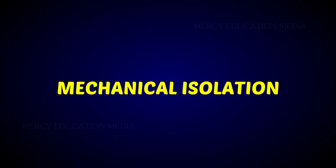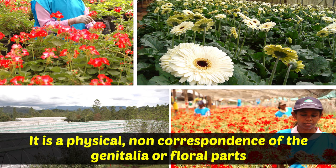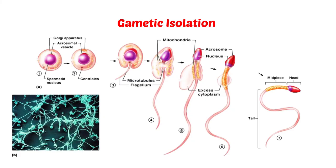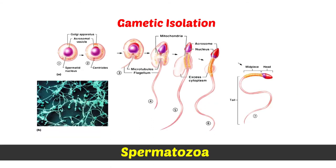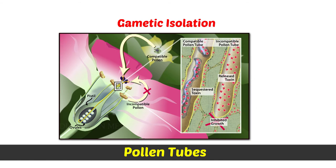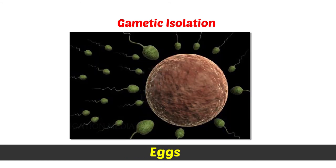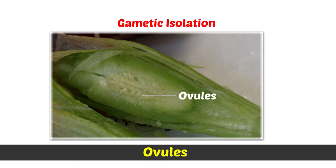What is mechanical isolation? It is a physical non-correspondence of the genitalia or floral parts. What is gametic isolation? Spermatozoa or pollen tubes of one species are not attracted to the eggs or ovules of another species.